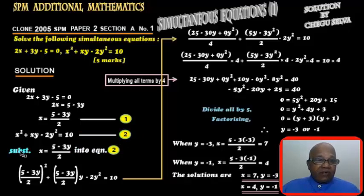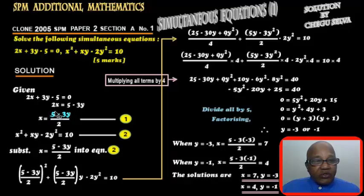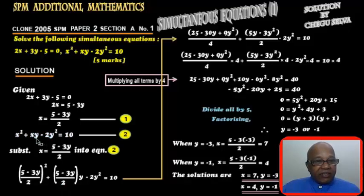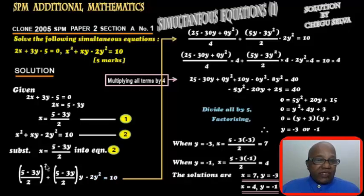Now substitute x equals to 5 minus 3y over 2 into equation 2 — the whole thing, substituted into equation 2. That means here and here. Once we substitute, we get: 5 minus 3y over 2, all squared — that is x squared — plus 5 minus 3y over 2 — that is x — times y, minus 2y squared equals to 10.